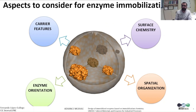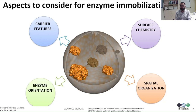Before immobilizing any enzymes, we need to consider four fundamental aspects. One is the carrier features. The second is the surface chemistry that allows the interactions between the material and the enzymes. The third is the spatial organization of the enzymes across the surface of the material. And last but not least, is how the enzyme is oriented on the surface of the material. The functionality and the stability of the immobilized enzymes will depend on these four aspects.